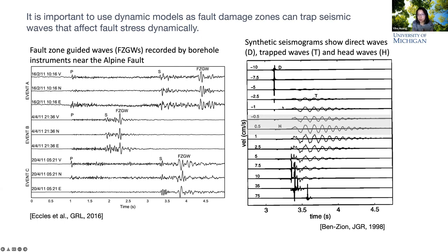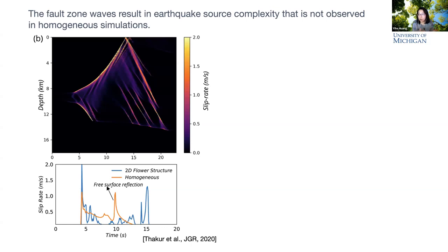A synthetic model shows trapped waves, guided waves, and head waves. Interestingly, not just stations close to the fault but also stations at some distance can observe these trapped waves. If the fault zone is asymmetric, head waves propagating along the slower side of the fault can catch up with direct waves, and these will modulate the rupture front during an earthquake. These fault zone waves can lead to source complexity not observed in homogeneous simulations.